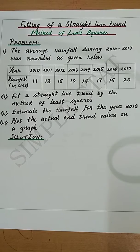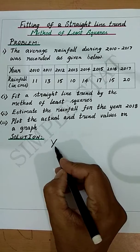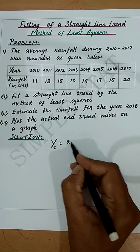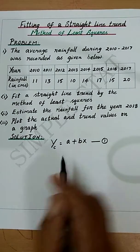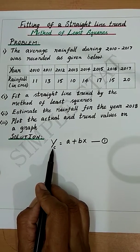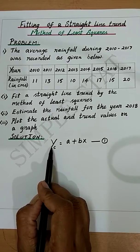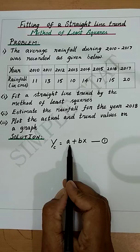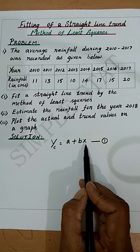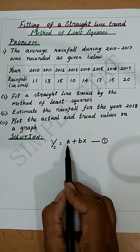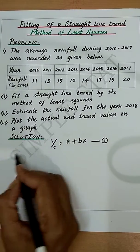The equation to fit a straight line trend is given by Yc = a + bx. This is the regression equation of Y on X. The dependent variable Y denotes the trend values, a denotes the intercept of Y, b denotes the slope of the trend line, and the independent variable x denotes the time period. The values of a and b are found using the normal equations.